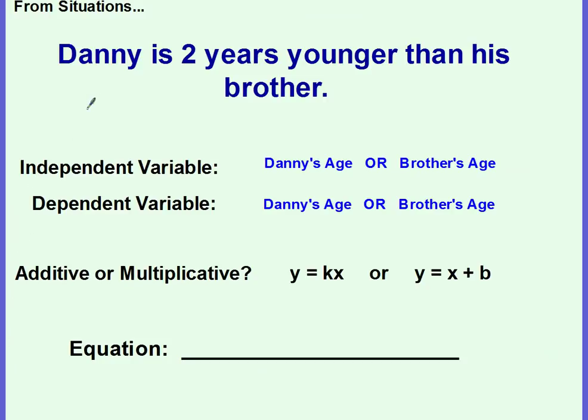Okay, so let's look at some situations and see if we can write the linear equations for them. Danny is two years younger than his brother. Alright, first we need to identify the independent and the dependent variables. So we're talking, we're comparing Danny's age with his brother's age. So which one is independent? Which one would you need to know? Danny's age or the brother's age? Well, we know Danny is two years younger than the brother. So we would need to know the brother's age, wouldn't we? That's your independent. Which means Danny's age would be your dependent.